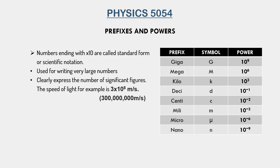The important thing here is the uppercase or lowercase of symbols. For example, milli and mega both have M — so it is very important that you write milli as small m and mega as capital M. If you mix those up, that would indicate the opposite and be problematic. Whenever we are writing symbols, it is important that we write them in the correct case.